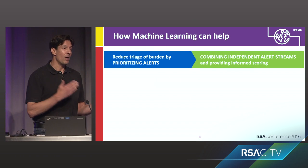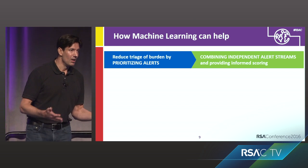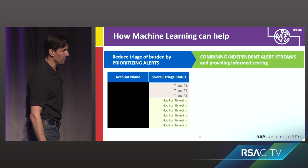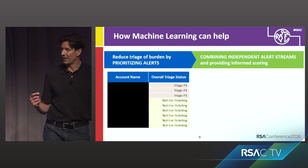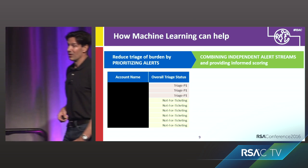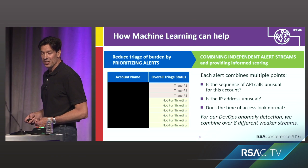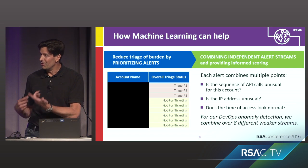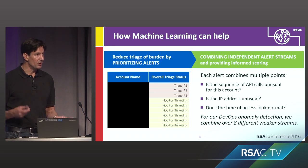This is where machine learning can help address all of these challenges. One is it can reduce the burden of triage by prioritizing alerts based on which are most suspicious — ranking them. Instead of getting a flat list of alerts, machine learning takes all those signals together and figures out which ones the analysts should focus on first. Each alert is now a combination of multiple inputs, doing that kind of correlation, and generating a higher-fidelity alert. The burden of triage is immensely simplified.